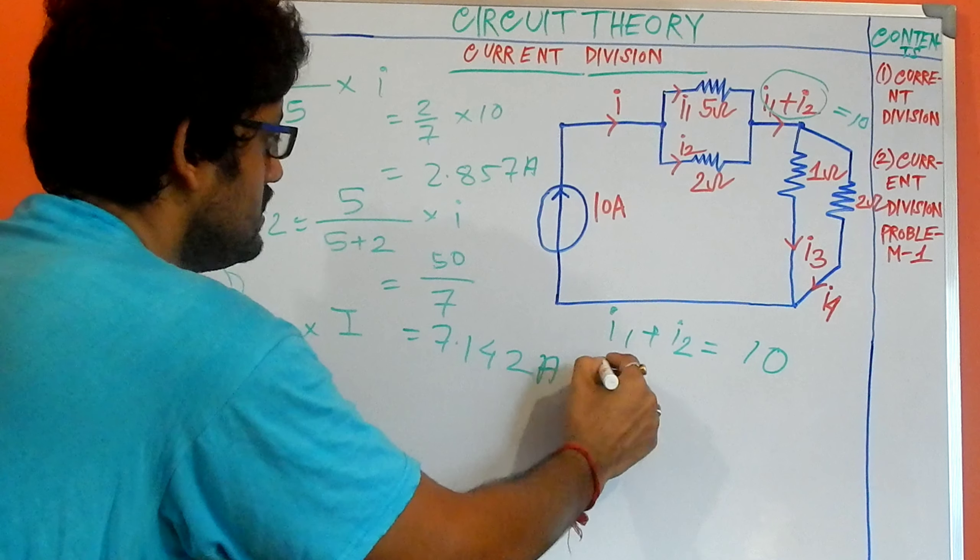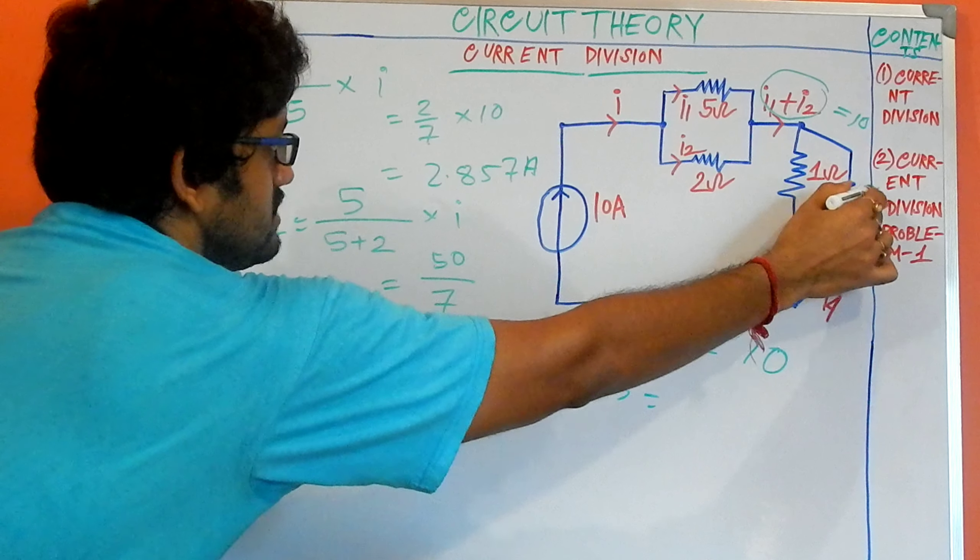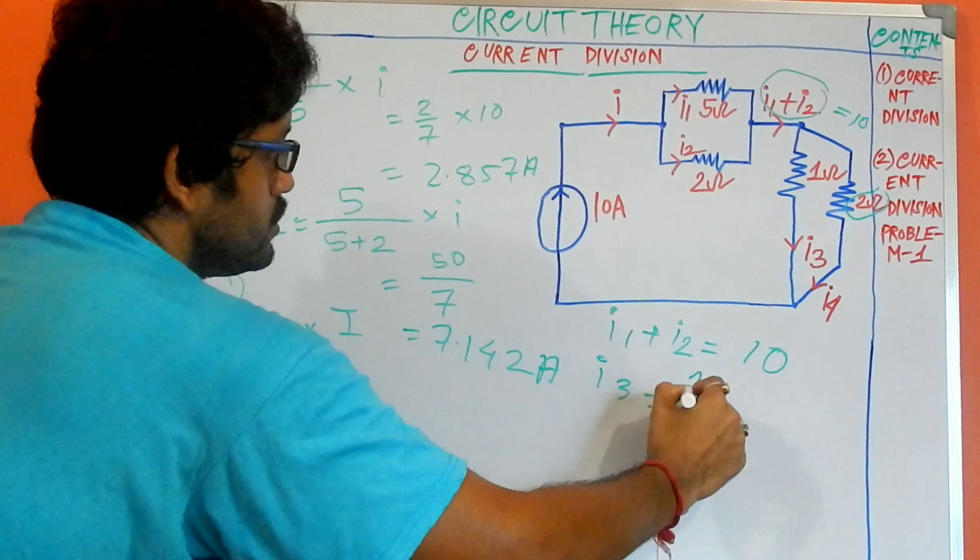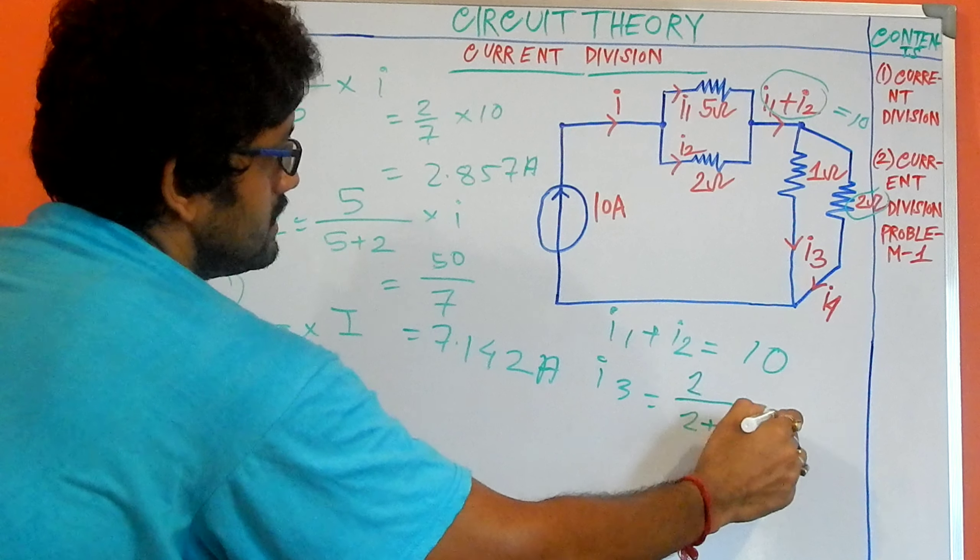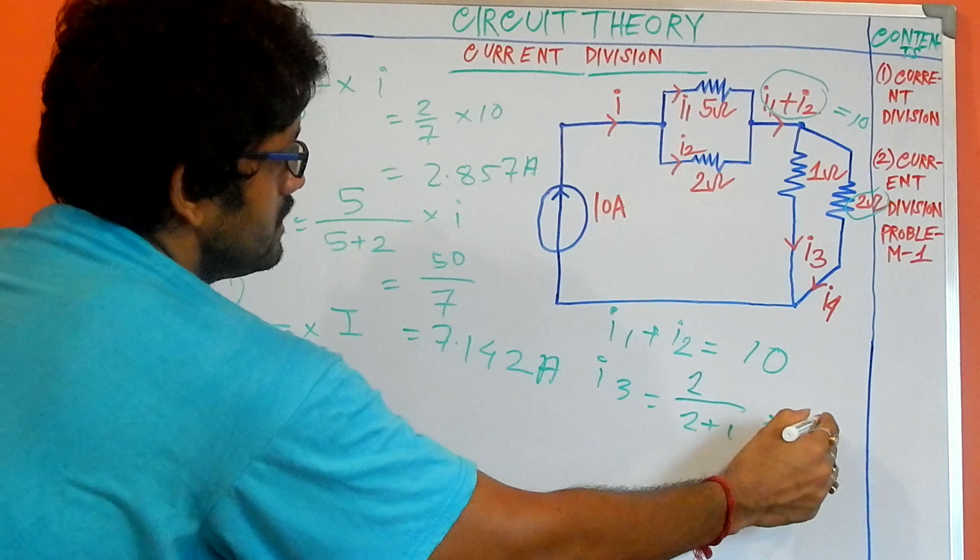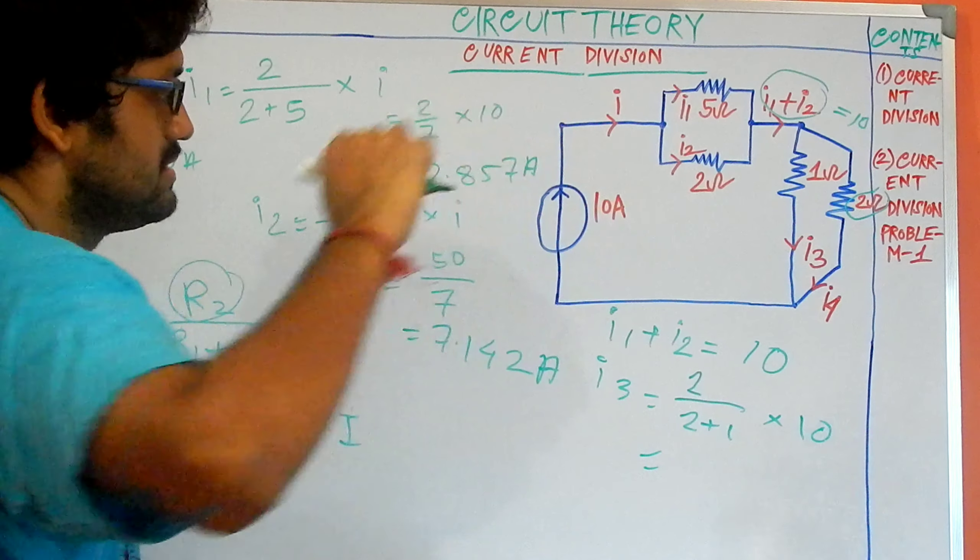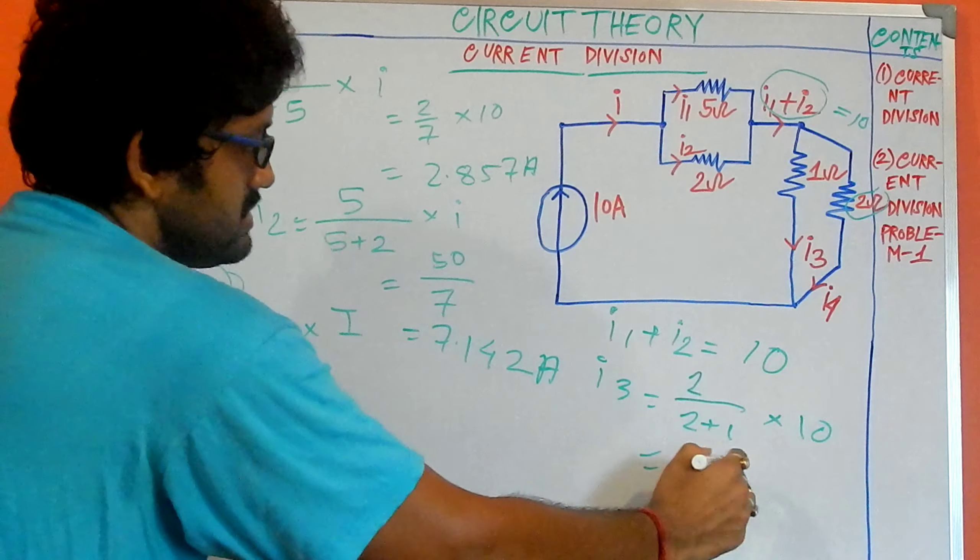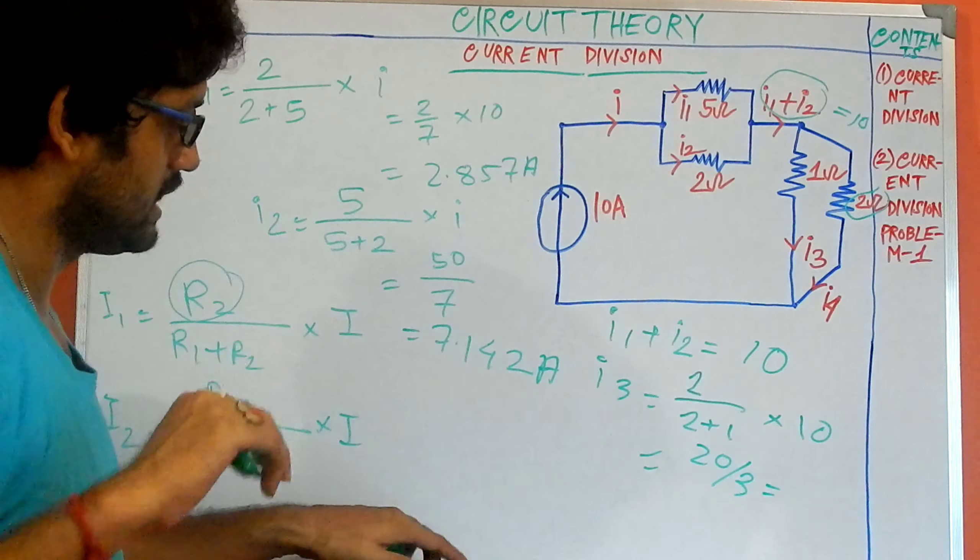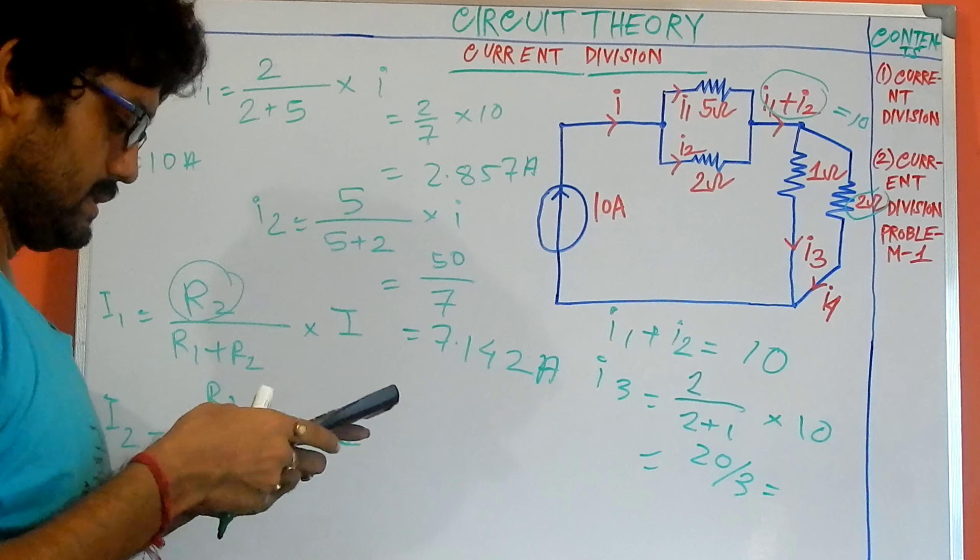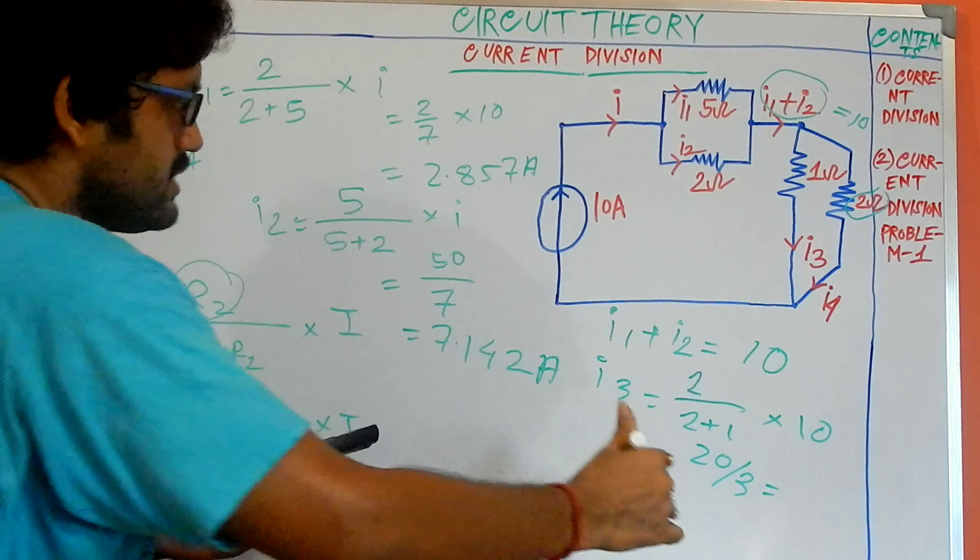So the value of I3 is the opposite. The opposite resistance is 2 ohm. So 2 divided by 2 plus 1 multiplied by our 10, as the total current is 10. So once again 20 by 3, and the value of the I3 current is 6.667 amps.